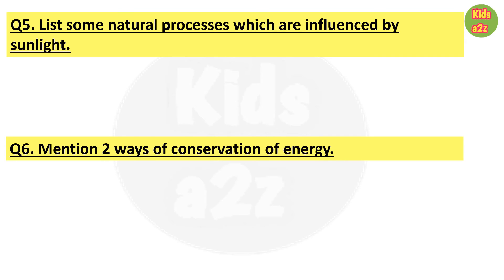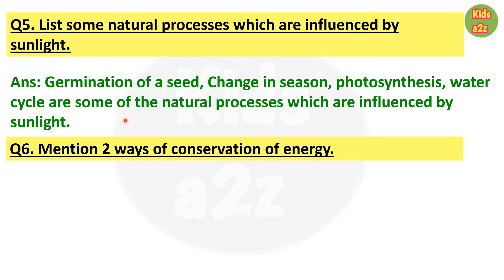Question number 5: List some natural processes which are influenced by sunlight. Answer: Germination of seeds, change in seasons, photosynthesis, and water cycle are some of the natural processes which are influenced by sunlight.